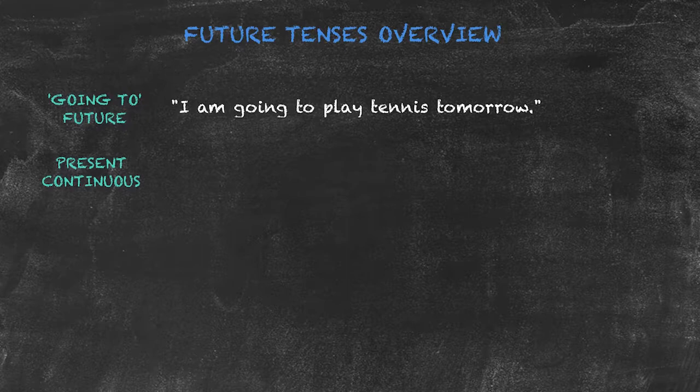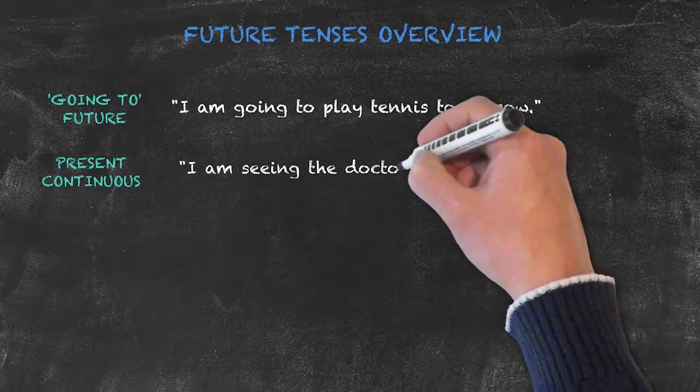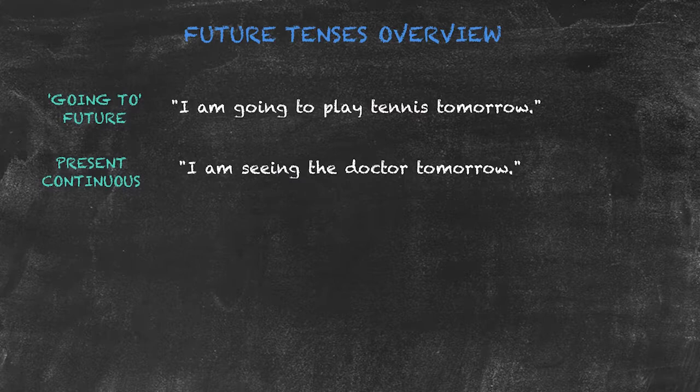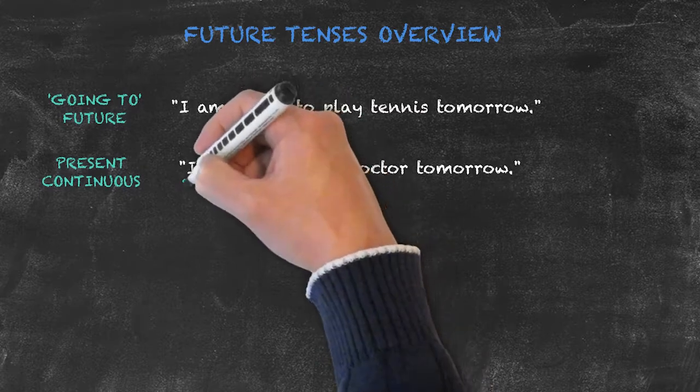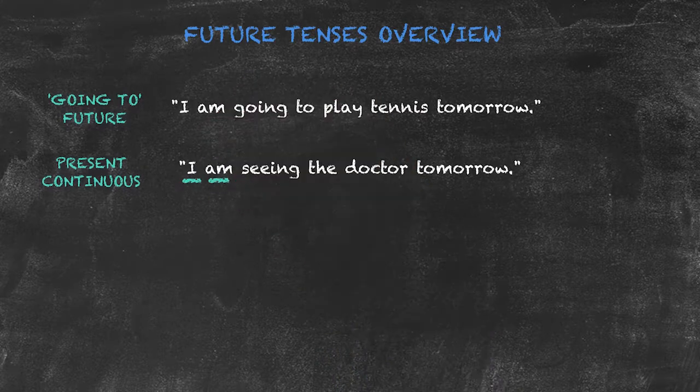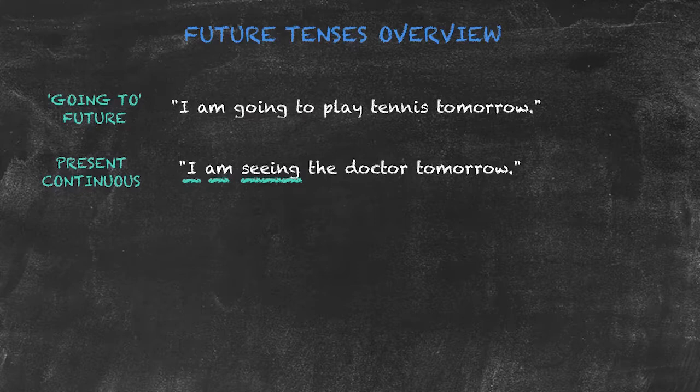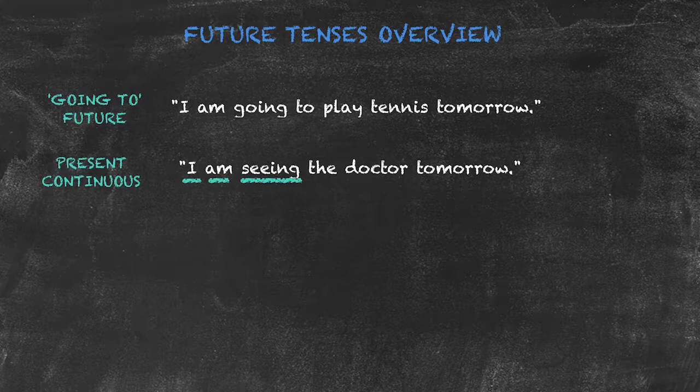Here we see: I am seeing the doctor tomorrow. This is just a normal present continuous structure that we've seen before: subject plus verb 'to be' in the present tense plus verb with 'ing' at the end. The present continuous tense for the future is used for future arrangements—things that you'd put in your planners, diaries, or journals.